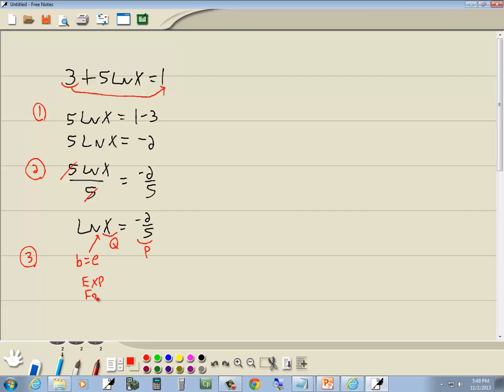So our exponent form is b to the p is equal to q. b was e to the negative 2 fifths power, that's our p, is equal to q, which is x.